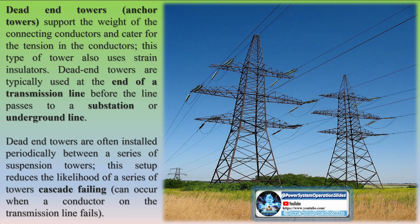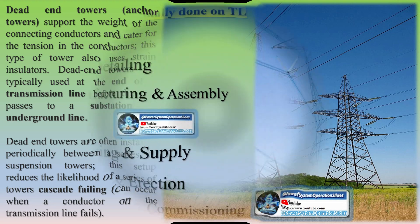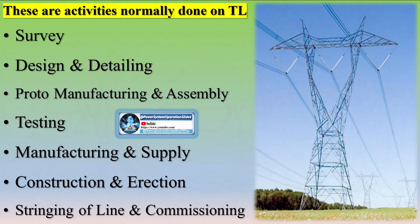Regarding tower configuration, various line configurations must be considered depending on the requirements of the transmission system, ranging from single-circuit horizontal to multi-circuit vertical structures, with single or V-strings in all phases, as well as any combination of these. Also, for very high voltages of 500 kV and above, conductors are bundled to reduce corona emission and reduce line inductance.